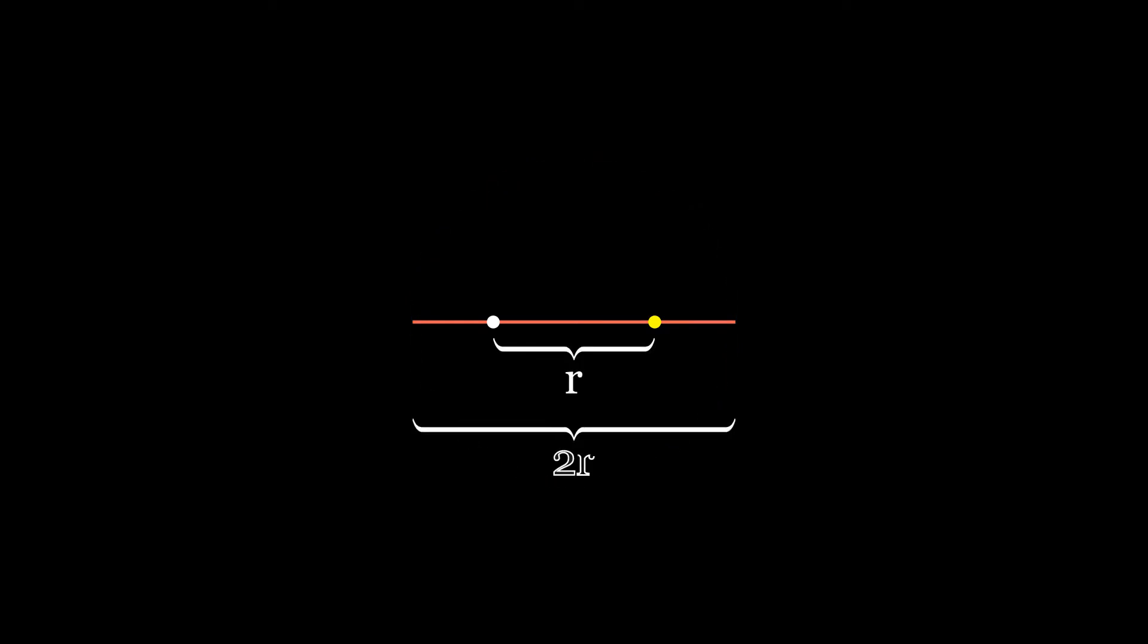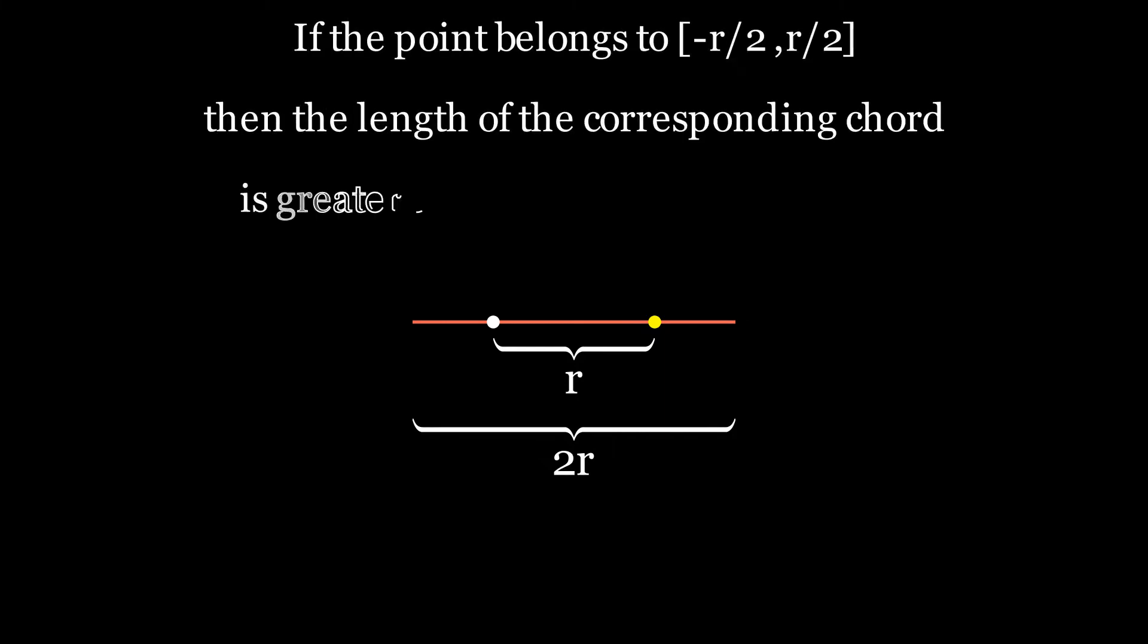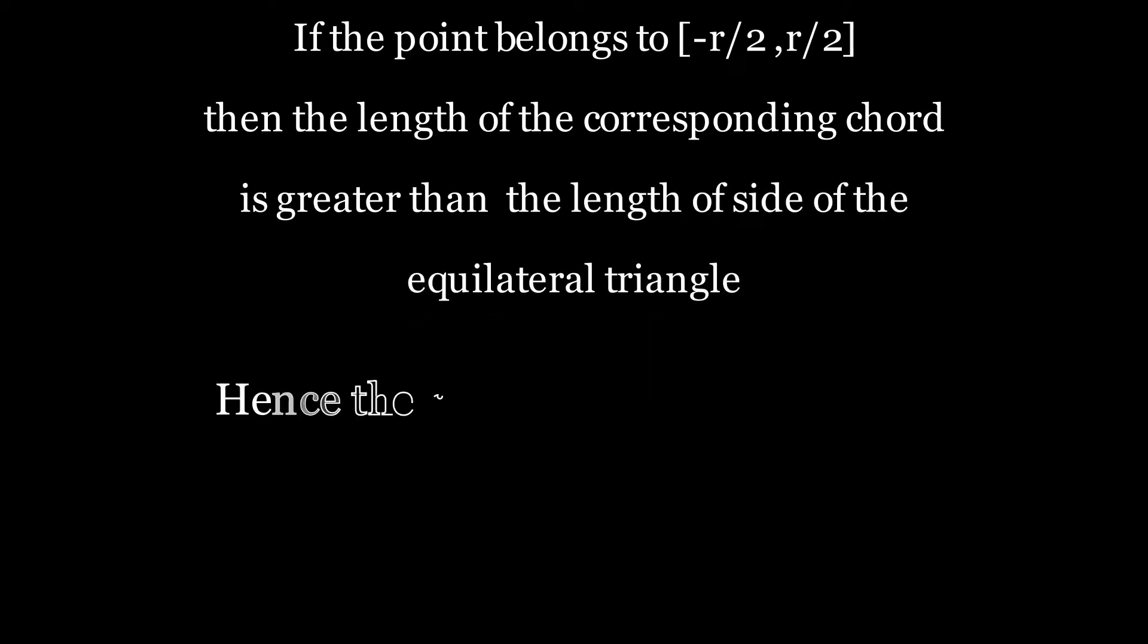The total length of the diameter is 2r. So if a point belongs to minus r by 2 comma r by 2, then the length of the corresponding chord is greater than the length of the side of the equilateral triangle. From this we get the required probability is one half.